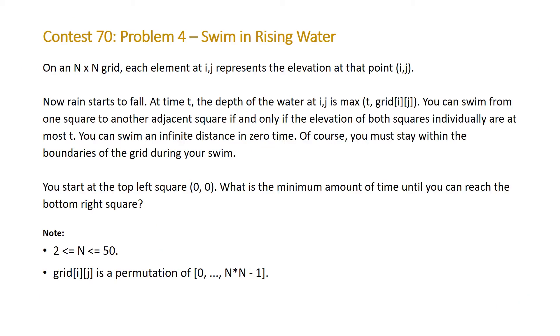The problem states on an N by N grid, each element at i,j represents the elevation at that point i,j. Now rain starts to fall. At time t, the depth of the water at i,j is the maximum of t and the value of that element.